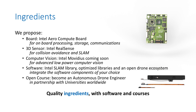Intel Aero is a set of quality ingredients. First, there is the Intel Aero compute board, with processing, storage, and communication all included. Then we have a 3D sensor called Intel RealSense, great for collision avoidance or SLAM. We also have computer vision with the Intel Movidius neural compute stick coming very soon to Aero. On the software side, you can run SLAM libraries, optimized libraries for processing, and take advantage of the vast open drone ecosystem. We also have training materials like this open course, and we develop university collaborations. In summary, we have a lot of quality ingredients: hardware, software, and documentation.